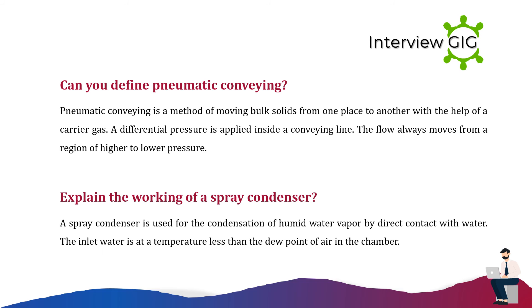Can you define pneumatic conveying? Pneumatic conveying is a method of moving bulk solids from one place to another with the help of a carrier gas. A differential pressure is applied inside a conveying line, and the flow always moves from a region of higher to lower pressure.